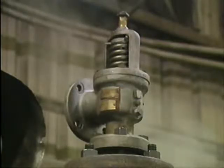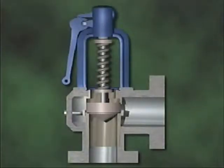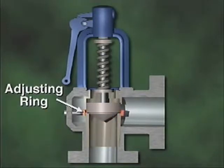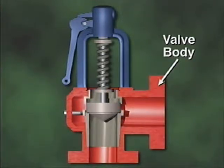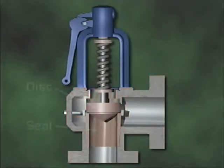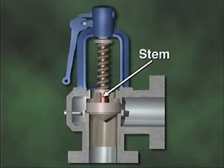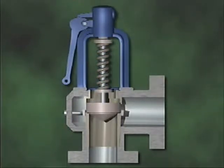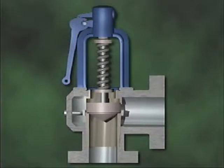In this part, we'll look at a huddling chamber safety valve. This type of safety valve is named for a small space called a huddling chamber located just below the valve's disc. The valve has an adjusting ring used to direct escaping steam toward or away from the disc. The valve body directs the flow of pressurized fluid. The disc and seat seal the system closed under normal pressure. The disc is mounted on a stem, and a spring holds the disc in place while the valve stem transfers tension from the spring to the disc.